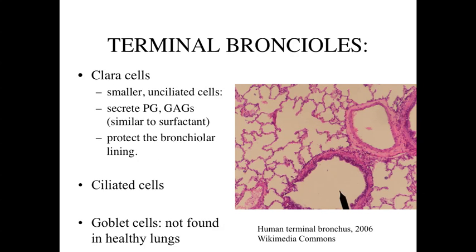Going deeper from the bronchioles into the terminal bronchioles, we're going to see Clara cells as the predominant cells lining the epithelium. They're going to be smaller and unciliated, and they're important for secreting proteoglycans and glycosaminoglycans — essentially putting a secretion onto the surface of the bronchioles to minimize surface tension, functioning similarly to surfactant, and also protecting the bronchiolar lining. There are still some ciliated cells, which are taller and give the terminal bronchioles an uneven appearance. Normally there are no goblet cells, but in some disease states goblet cells appear in these deeper regions due to particulate matter irritating the cells.